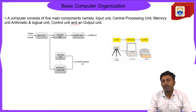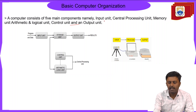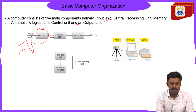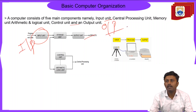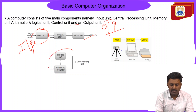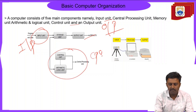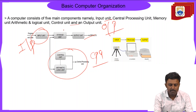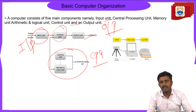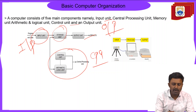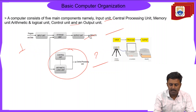This diagram shows the basic computer organization. There are five main components: the input unit, output unit, CPU (central processing unit), memory, and inside the CPU — ALU and the control unit. The CPU is the heart of the system, responsible for performing all operations controlled by a computer program.